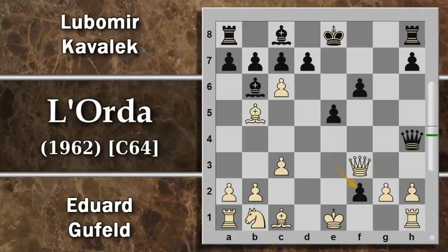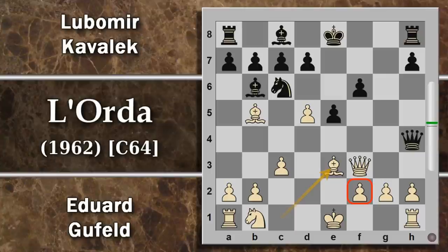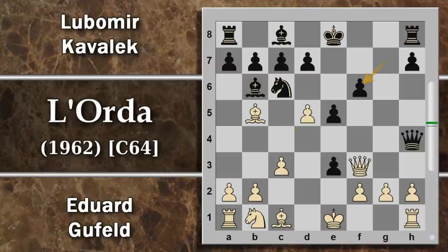L'alternativa, in vista del possibile pedone su f2 che concederà al nero un pedone fortissimo in faccia al re, poteva essere alfiere per e3 invece di catturare il cavallo. Questo impedirebbe al nero di avanzare su f2, però permette al nero di cambiare i pezzi, e magari riesce a salvare il cavallo. La situazione non è ben chiara.